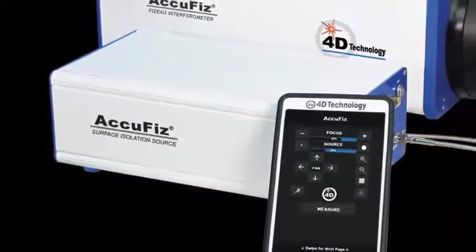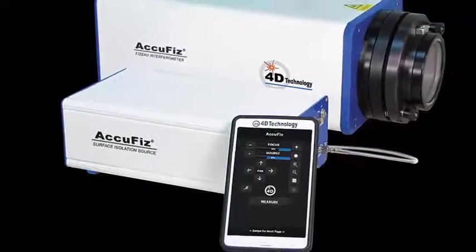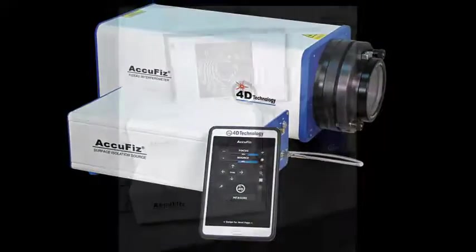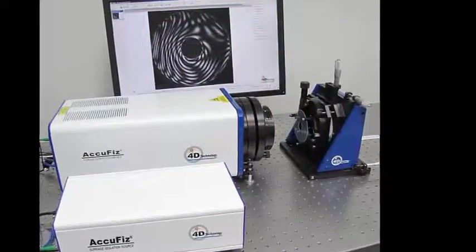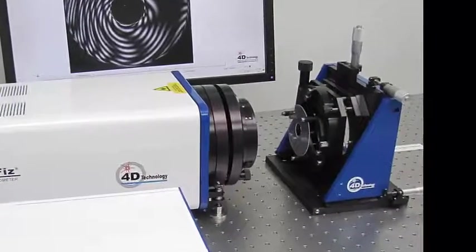4D Technologies' ACUFIS interferometer can accomplish this technique using a second fiber-coupled surface isolation source. The source creates a 100 micron wide measurement zone, approximately 100 millimeters in front of the aperture.